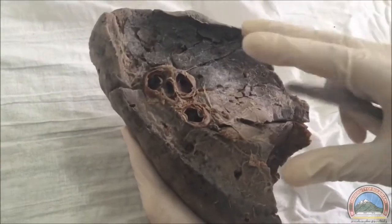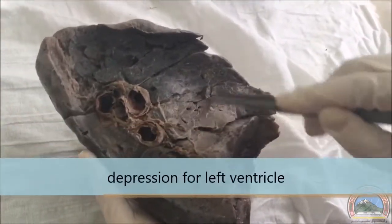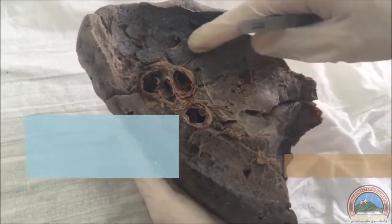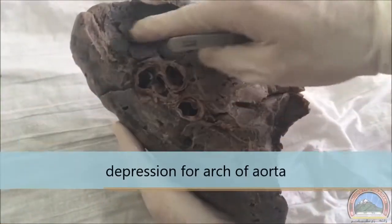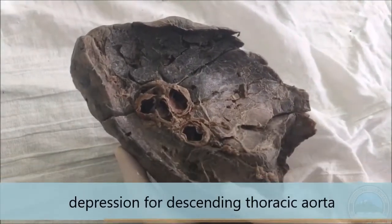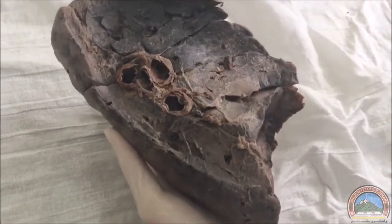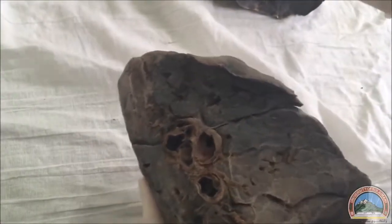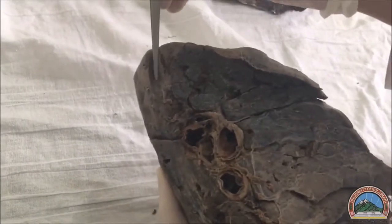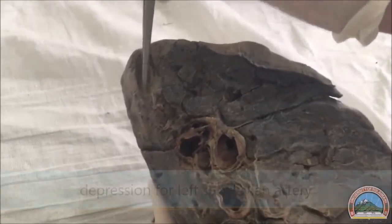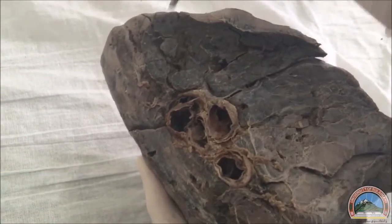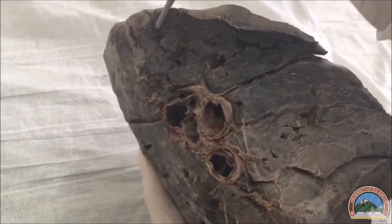Depressions or grooves of the left lung: this is the depression for the left ventricle. From the left ventricle you've got the aorta, so this is the depression for the ascending aorta, this is for the arch of the aorta, and this is for the descending thoracic aorta. From the arch of the aorta we've got two branches: posteriorly, the left subclavian artery, and anteriorly, the left common carotid artery. So here we have the groove for the left subclavian artery and the groove for the left common carotid artery.